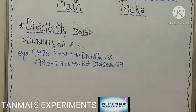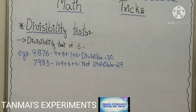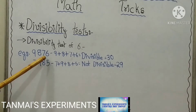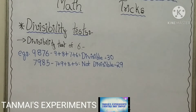The divisibility test of 6 is very easy. We have already learned the divisibility tests of 2 and 3. For 6, if the given number is divisible by both 2 and 3, then the entire number is divisible by 6 also. If it is divisible by only 2 or only 3, then it is not divisible by 6. For example, 9,876: 9 plus 8 plus 7 plus 6 equals 30, so it is divisible by 3. The last digit is 6, which is even, so it is divisible by 2 also. Hence the entire number 9,876 is divisible by 6.